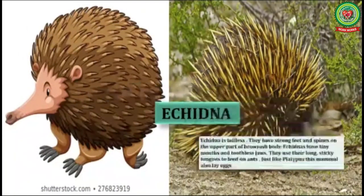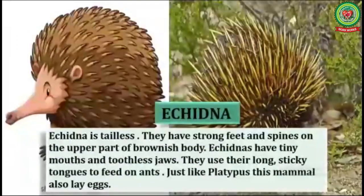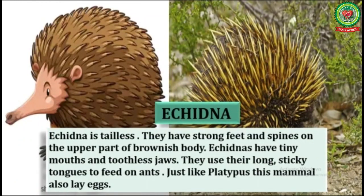Next is echidna. Echidna is tail-less. They have strong feet and spines on the upper part of their brownish body. Echidnas have tiny mouths and toothless jaws. They use their long sticky tongues to feed on ants. Just like the platypus, this mammal also lays eggs.